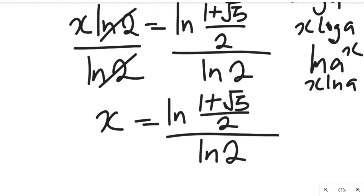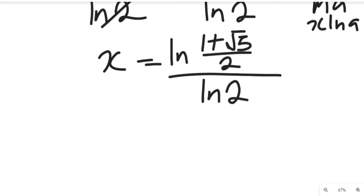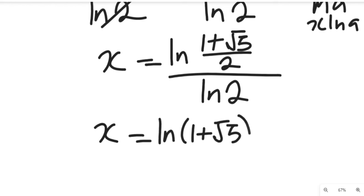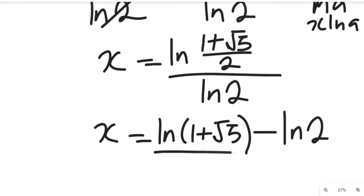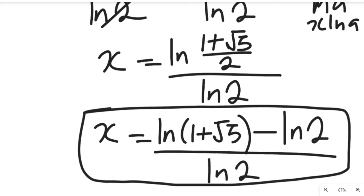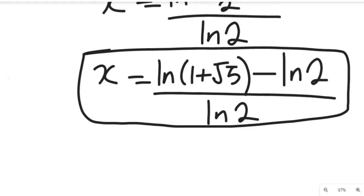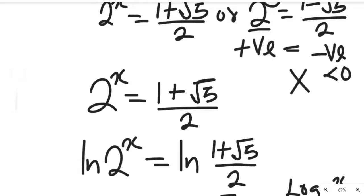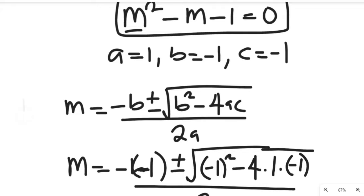Using the division law of logarithms, this expression gives us x equals the natural log of 1 plus root 5, minus the natural log of 2, all divided by the natural log of 2. This is the solution to that exponential equation. You can further simplify this to get the real numerical value of x.